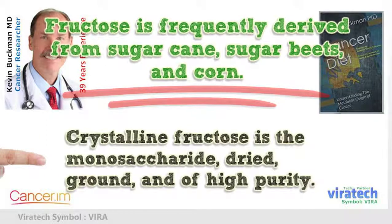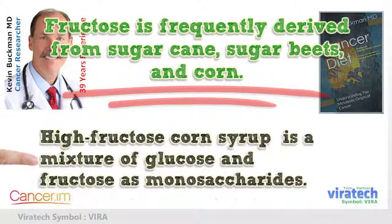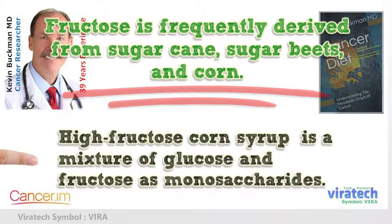Fructose is frequently derived from sugarcane, sugar beets, and corn. Crystalline fructose is the monosaccharide in dried, ground, high-purity form. High fructose corn syrup is a mixture of glucose and fructose as monosaccharides.